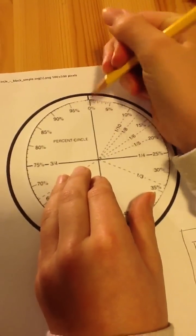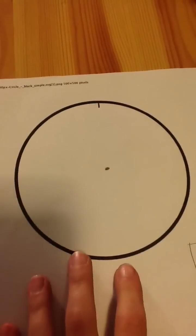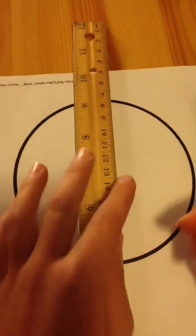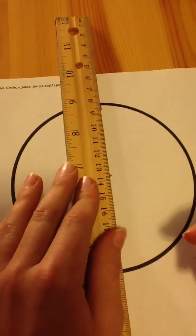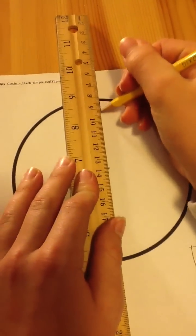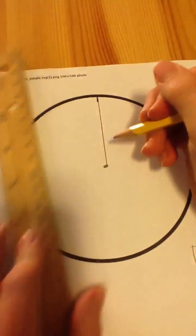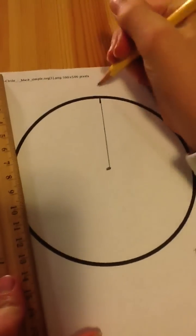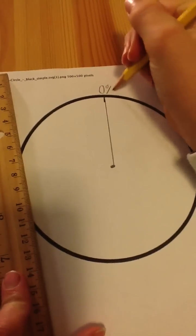Your dot through your percent circle. Once you have that done, you can take a ruler, kind of trace it down like so. We can name that zero percent.